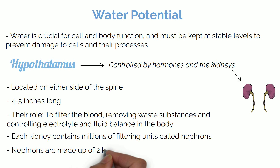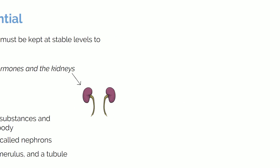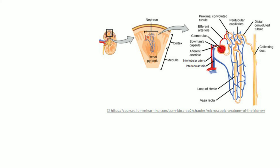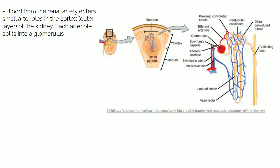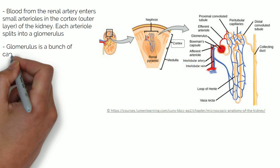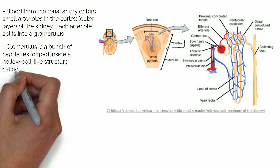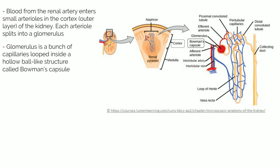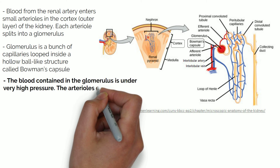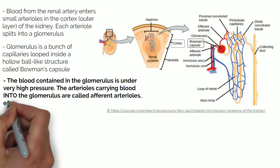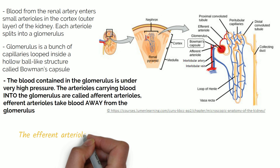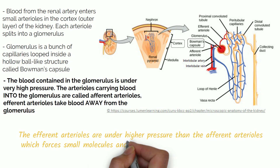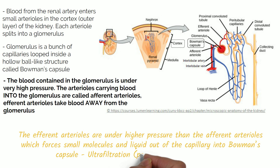Each kidney contains millions of filtering units called nephrons, made up of two key parts: the glomerulus and a tubule. Blood from the renal artery enters small arterioles in the cortex, the outer layer of the kidney, and each arteriole splits into a glomerulus — a bunch of capillaries looped inside a hollow ball-like structure called Bowman's capsule. Blood in the glomerulus is under very high pressure; afferent arterioles carry blood into the glomerulus, while efferent arterioles take blood away. The higher pressure forces small molecules and liquid out of the capillary into Bowman's capsule — a process known as ultrafiltration, which produces glomerular filtrate.